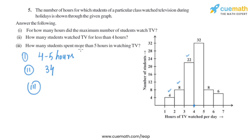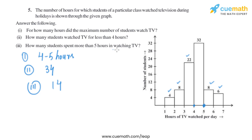The third part asks: how many students spend more than 5 hours watching TV? Looking at the graph, for more than 5 hours there are 8 students for 5 to 6 hours and 6 students for 6 to 7 hours. Adding them together gives 14 students who watch TV for more than 5 hours.